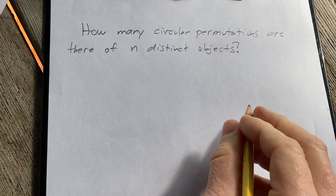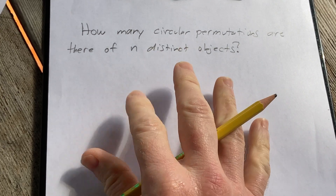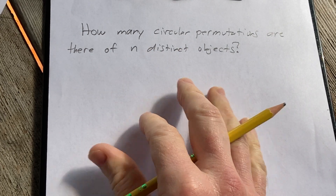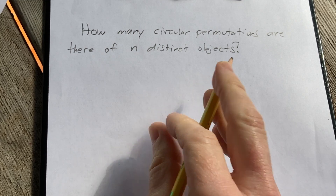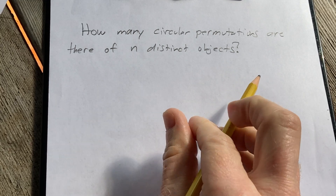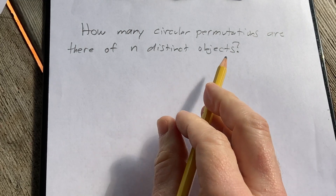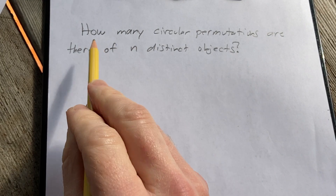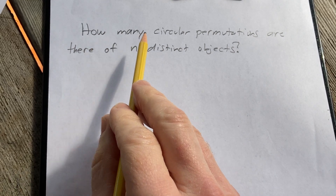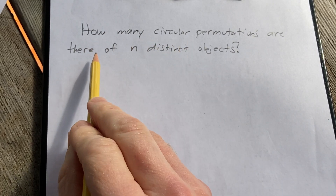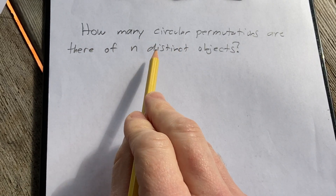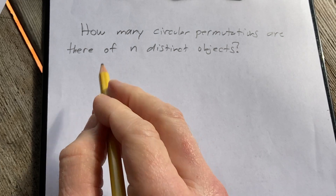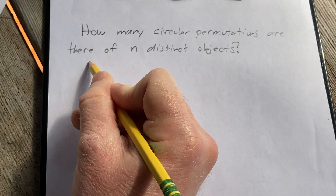In this video, we're going to discuss circular permutations, and we're going to attempt to come up with the formula for the number of circular permutations. The question says: how many circular permutations are there of n distinct objects? So let's go ahead and work through it.